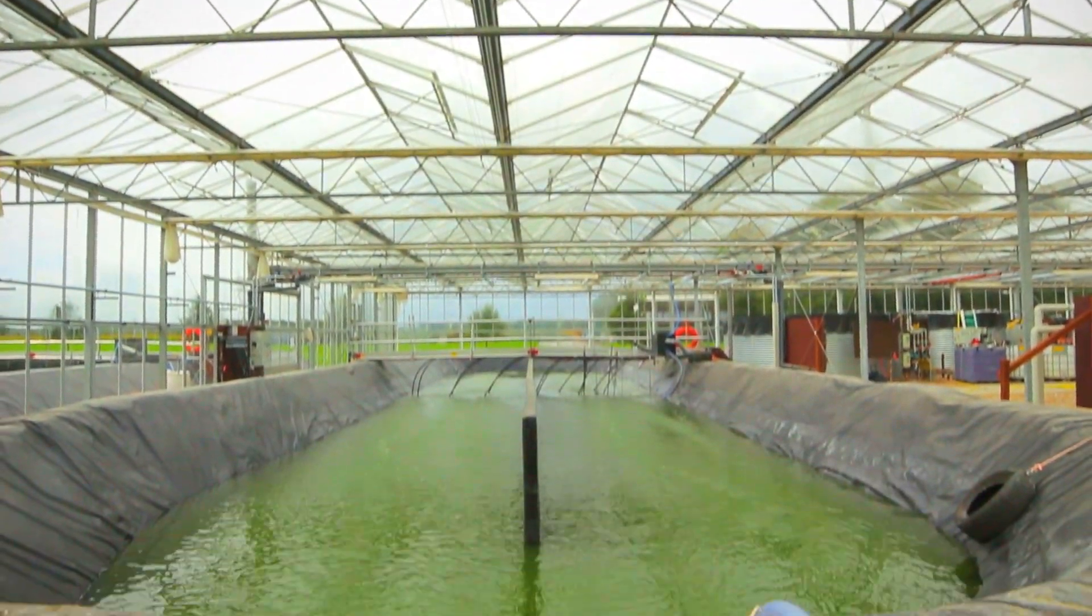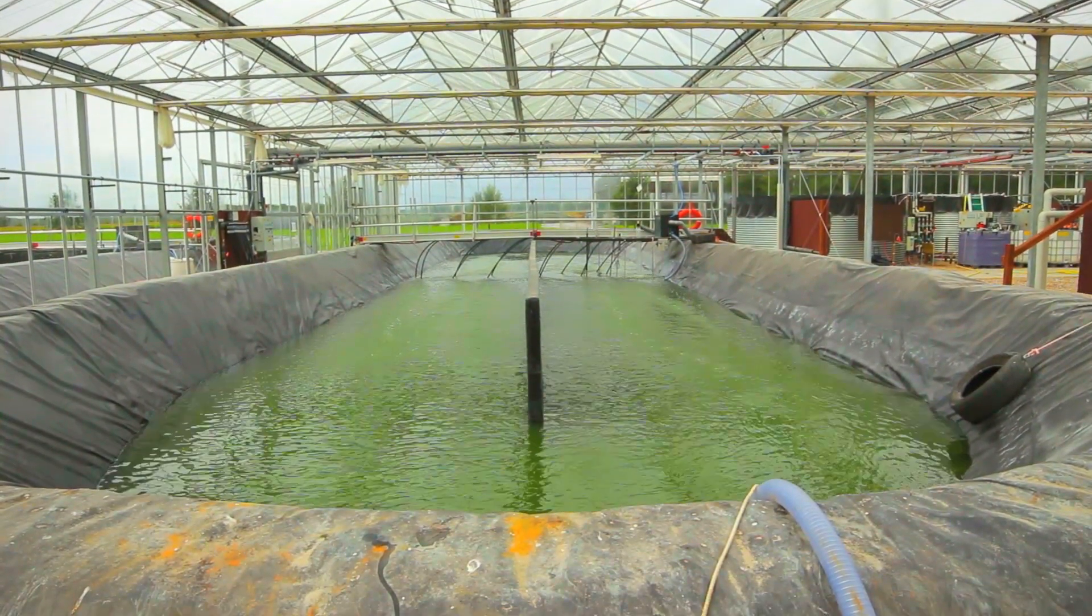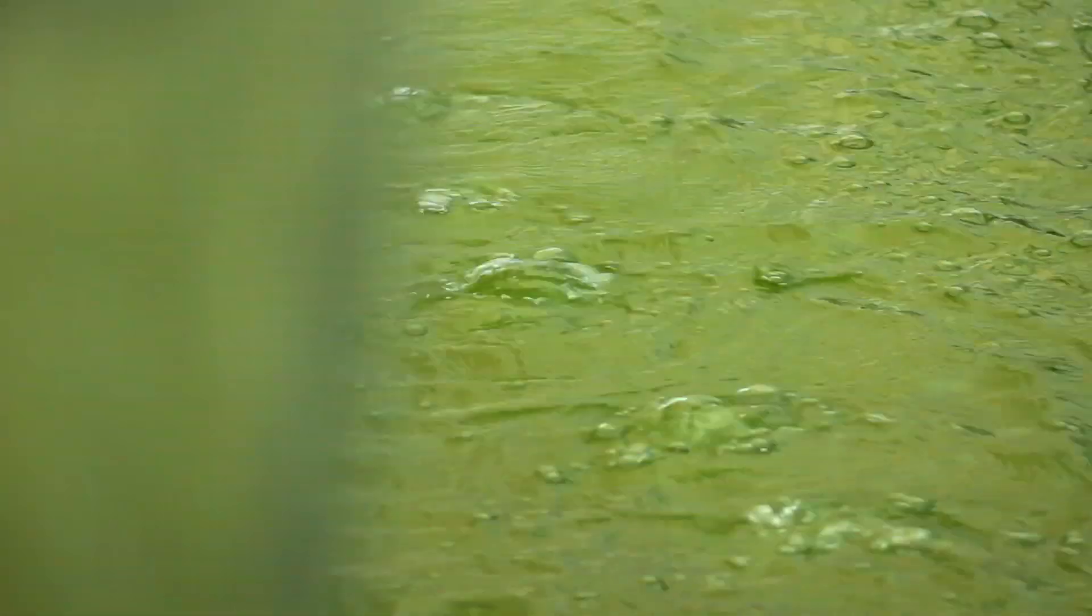Algae are considered the crop of the future. They grow fast, just need sunlight, carbon dioxide and minerals, and can be cultivated on infertile soil.